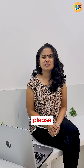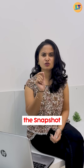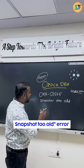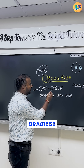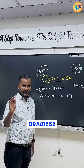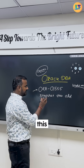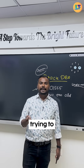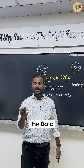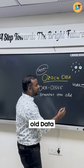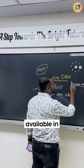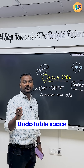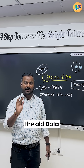Can you please explain the snapshot too old error? The error code is ORA-01555. This error occurs when you are trying to fetch old data and that old data is no longer available in the undo tablespace — the undo tablespace has overwritten that old data.